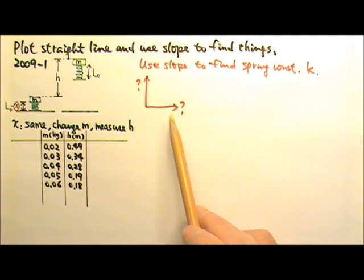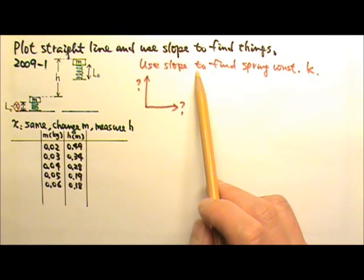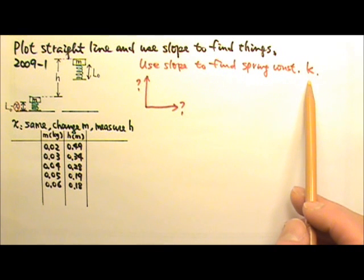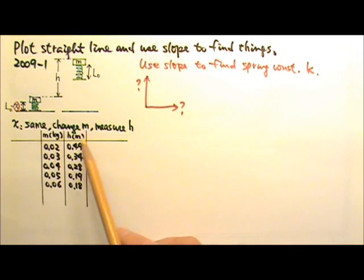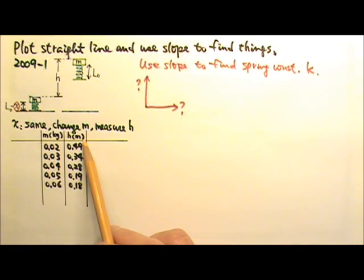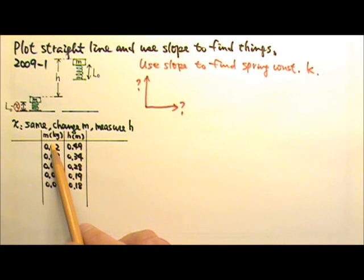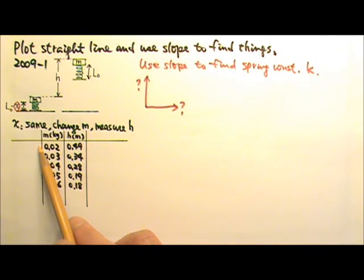We are asked what quantities to plot in a graph so the slope of the best fit straight line can be used to find the spring constant k. For this kind of questions, again we can write an equation to relate the independent variable and the dependent variable. In this case, the independent variable is the one we change, the mass m. The dependent variable is the height h, because the height can change when the mass attached to the spring changes.